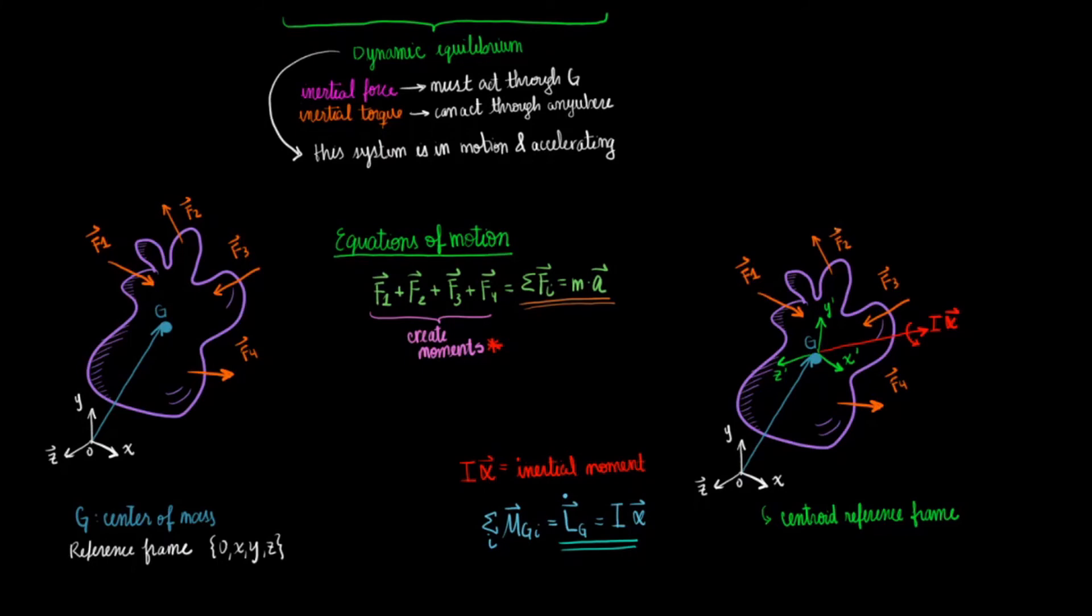From here now, we can write up the sum of all moments about the center of mass g. That's going to be equal to the derivative of the angular momentum, which we can say equals the moment of inertia times the angular acceleration.